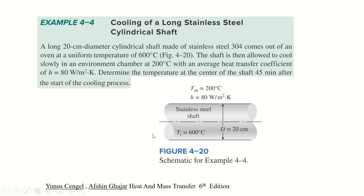In this example problem, a long 20 centimeter diameter cylindrical shaft made of stainless steel comes out of an oven at a uniform temperature of 600 degrees C. The shaft is then allowed to cool slowly in an environment chamber at 200 degrees C with an average heat transfer coefficient of 80 watts per meter squared.